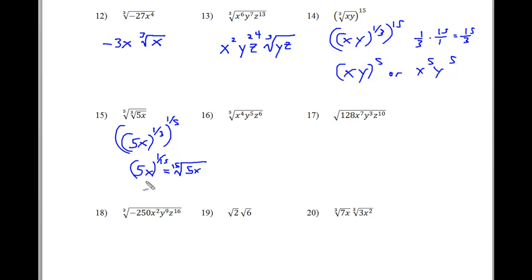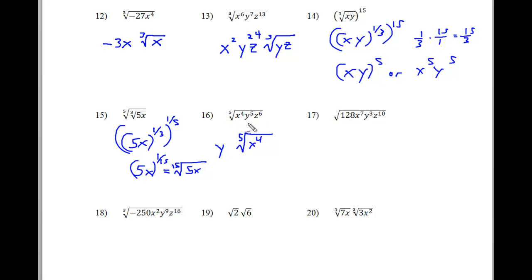And in problem number 16, 5 does not go into 4 at all, so that x to the fourth power stays inside the radical — inside the fifth root there. Now 5 goes into 5 once, so here's my y. And 5 goes into 6 once, leaving 1 behind. So there's my answer for number 16.